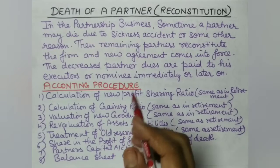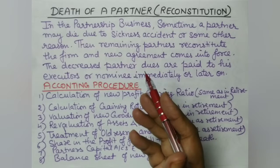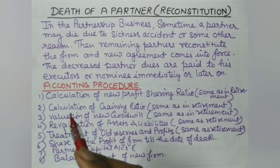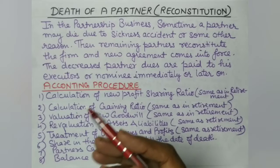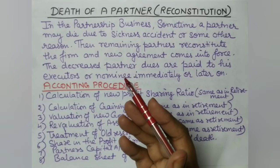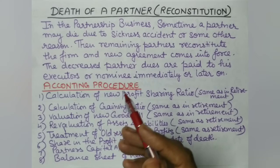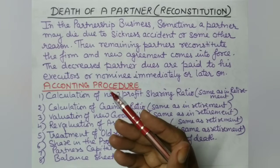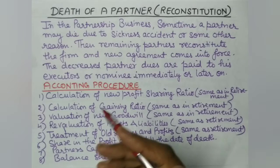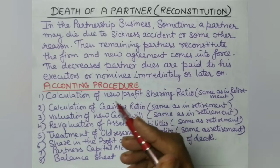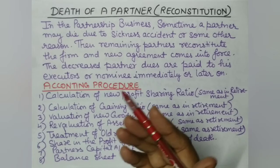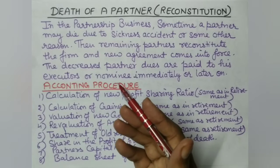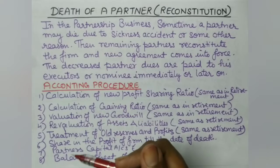In the case of death, we follow a specific accounting process. The accounting procedure for retirement and death is largely the same — there are only a few differences. In retirement, partners mostly retire at the year-end when the accounting year is complete. But in death, it can happen at any time — there is no fixed time period. So we calculate dues up to the date of death.